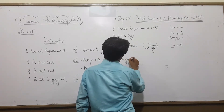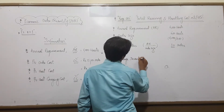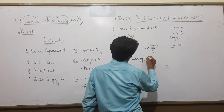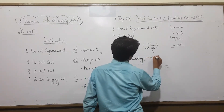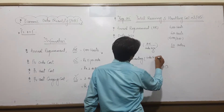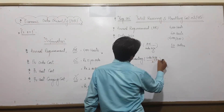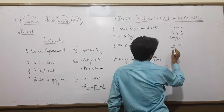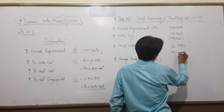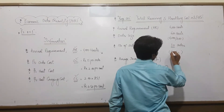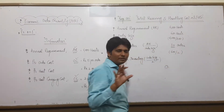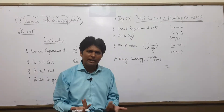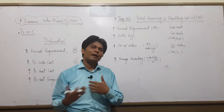Average Inventory = Order Size ÷ 2 = 600 ÷ 2 = 300 units. There is no safety stock in this question — the question has no safety stock requirement. So on average, 300 units remain in our store.